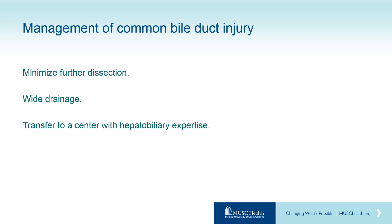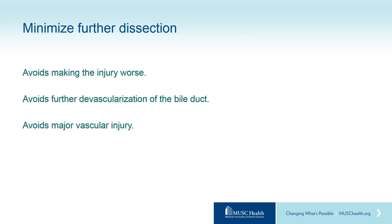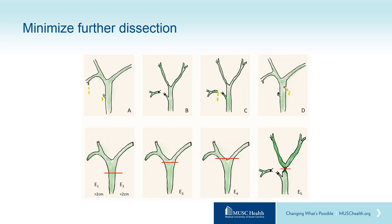Once a bile duct injury is encountered or suspected, the principles of management are: first and foremost, minimize further dissection; leave a drain; and then transfer to a center with hepatobiliary expertise. Most of the time when a bile duct injury is suspected, you have an inflamed field with bile leaking from somewhere and cannot tell exactly where. Minimizing dissection avoids making the bile duct injury worse, avoids further devascularization of the bile duct, and avoids major vascular injury.